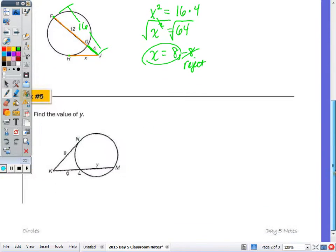And the last one, before we take a look at the construction. Find the value of y. We have a tangent and a secant. So tangent squared equals whole times external. My tangent is 9, so 9 squared. The whole part of it being algebraic would be the sum, y plus 6, times that external piece of 6.